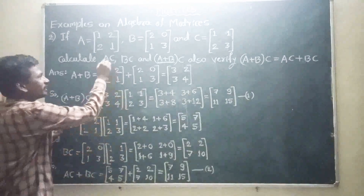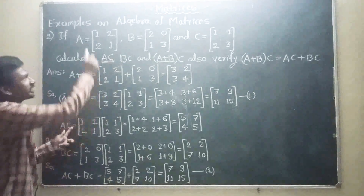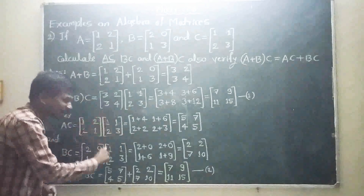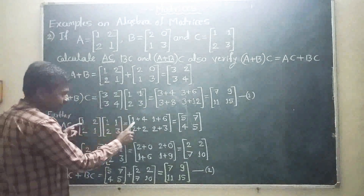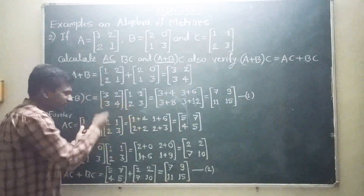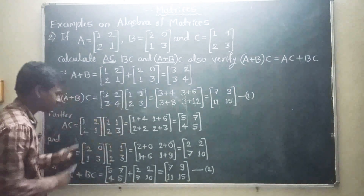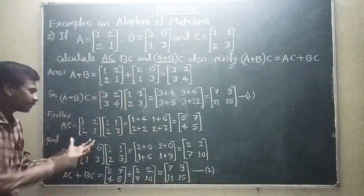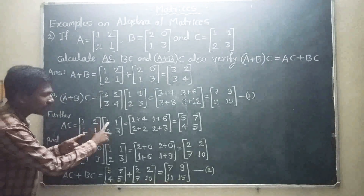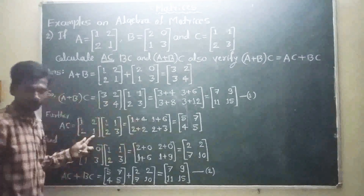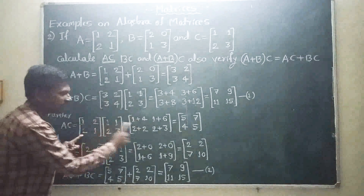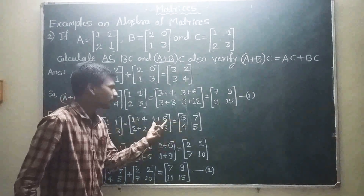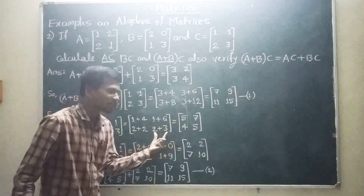Next, solve A into C. A into C: row into column multiplication. 1 into 1 plus 2 into 2 equals 5; 1 into 1 plus 2 into 3 equals 7; 2 into 1 plus 1 into 2 equals 4; 2 into 1 plus 1 into 3 equals 5. So A into C equals the matrix 5, 7, 4, 5. Next, solve B into C: B matrix into C matrix, row into column. First row first column: 2 into 1 plus 0 into 2 equals 2. First row second column: 2 into 1 plus 0 into 3 equals 2. Second row first column: 1 into 1 plus 3 into 2 equals 1 plus 6 equals 7. Second row second column: 1 into 1 plus 3 into 3 equals 1 plus 9 equals 10. So B into C equals 2, 2, 7, 10.